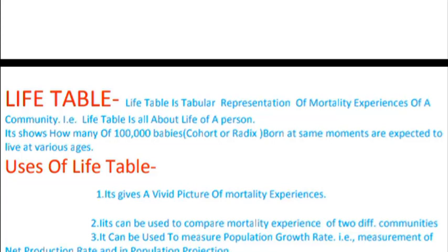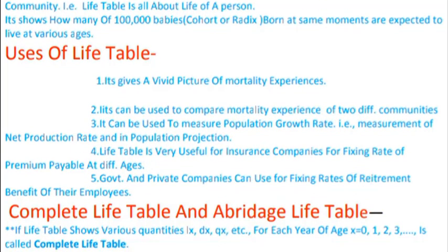The life table shows how many of 100,000 babies — a cohort or radix — born at the same moment are expected to live at various ages. For example, in a country, babies born today — what is the expectancy they will live at various years, say 2020, 2021, 2022. That is what the life table tells us.